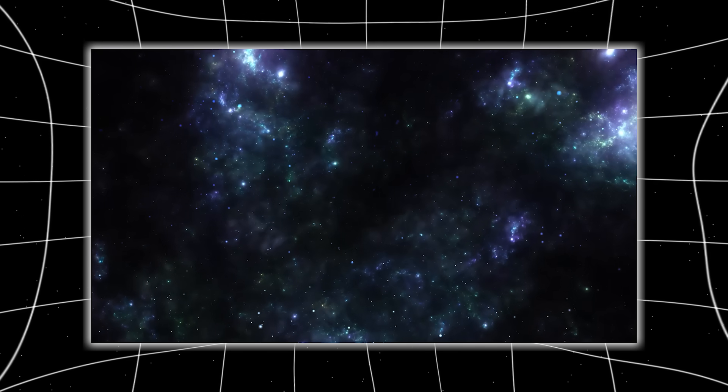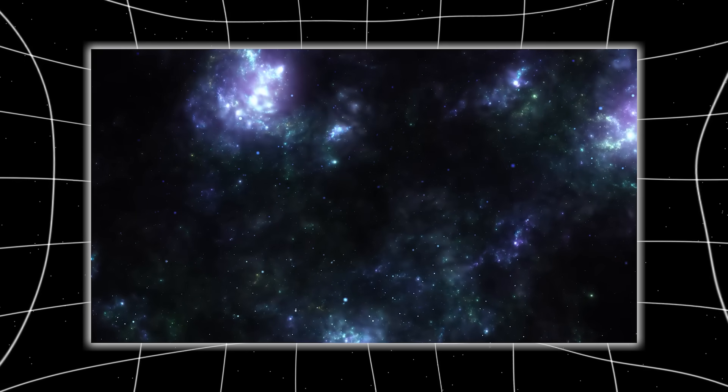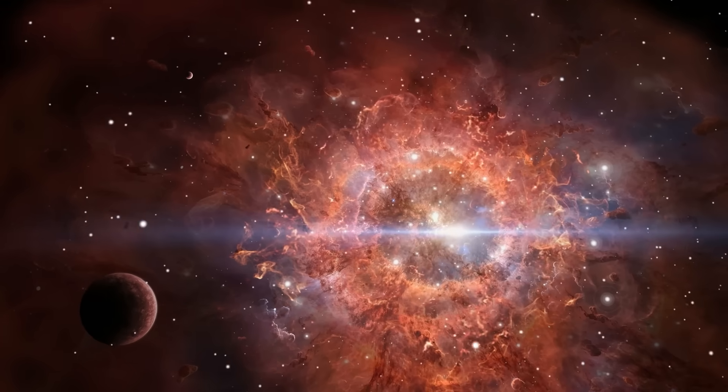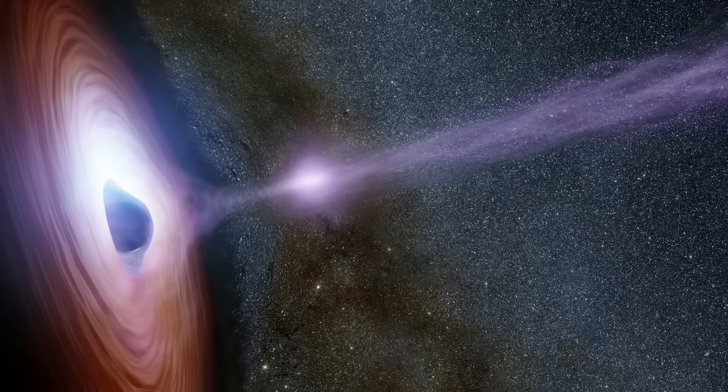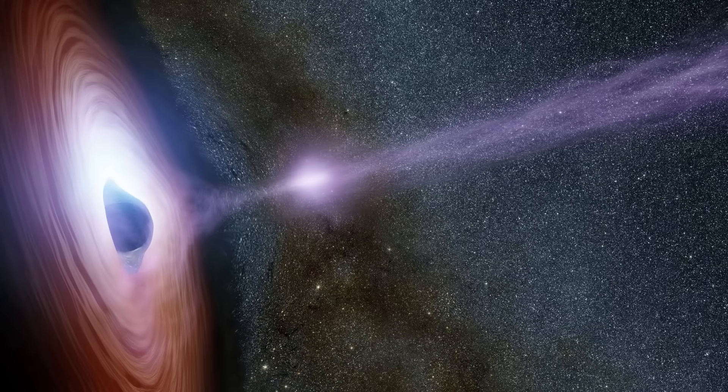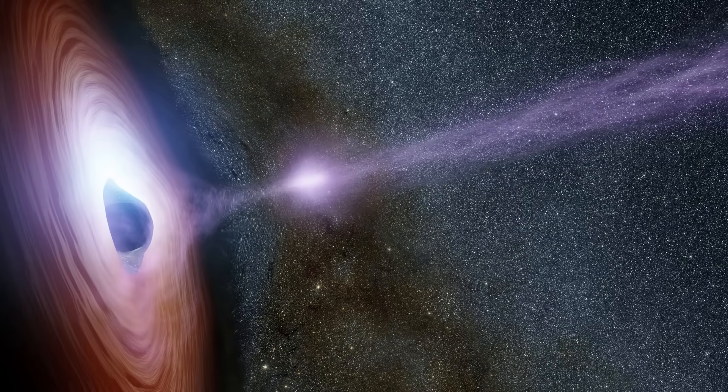Its gravity field was so extreme that it bent light across hundreds of thousands of light years, creating a halo that seemed to project the shapes of entire galaxies. But the strangest part was what it reflected back. When Webb looked into it, it saw us.